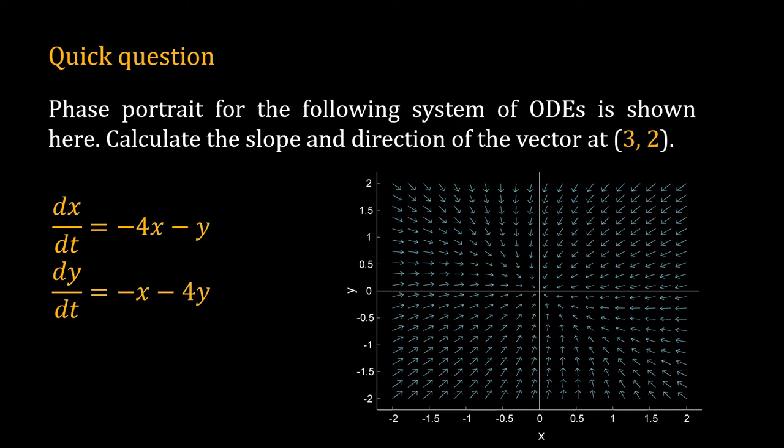Hope you are done with the calculation. I have shown the phase plane plot for this system. Notice that the flow of the system is towards 0, 0. As if water from all over the place is moving towards the origin. In fact, x equal to 0, y equal to 0 is the steady state of this system.